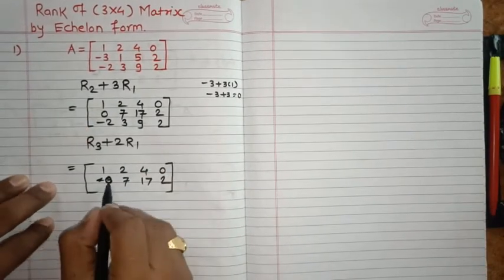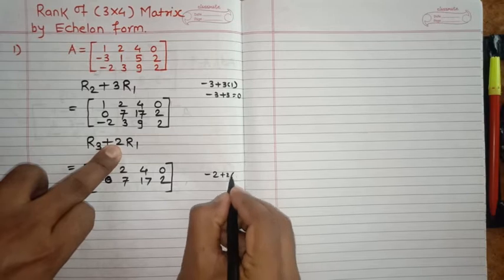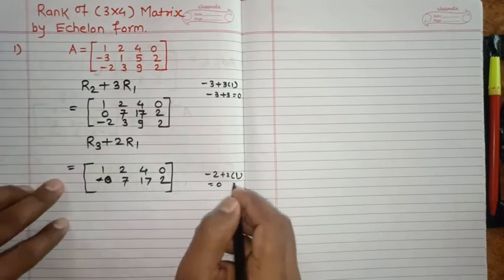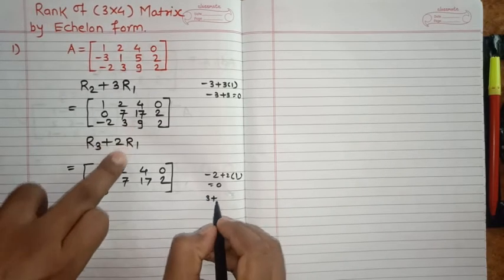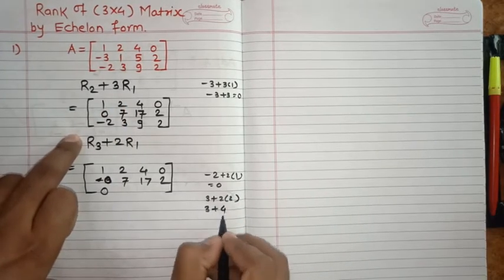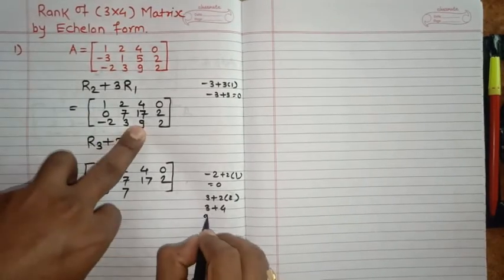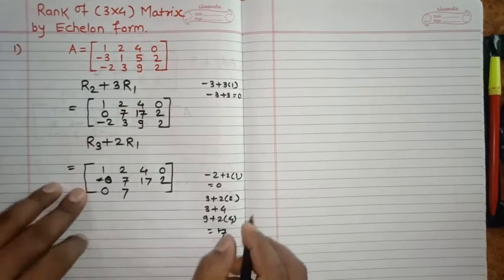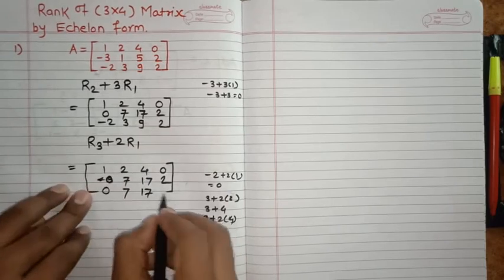Okay, here is 0. Now R3, what is R3? Here minus 2 plus 2 times R1, R1 is 1, so minus 2 plus 2 is 0. Similarly, here R3 is 3 plus 2 into R1, R1 is 2, so 3 plus 4 is 7. Similarly, here R3 is 9 plus 2 into 4, so here also 17. And lastly, 2 into 0, so remaining 2 here.